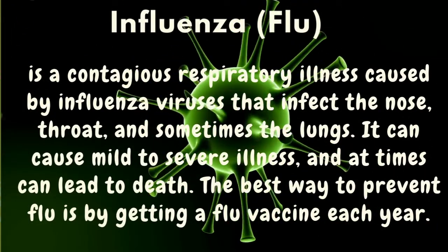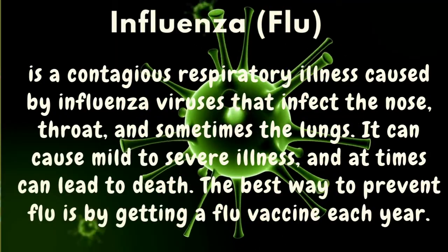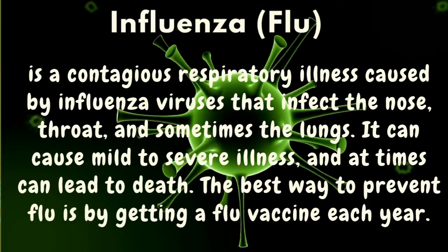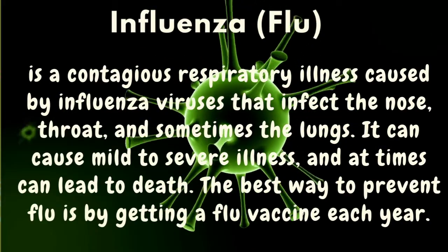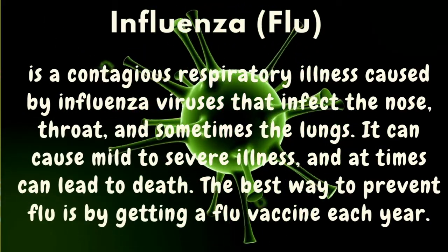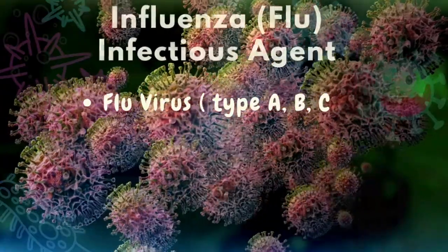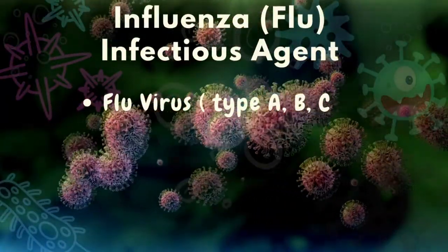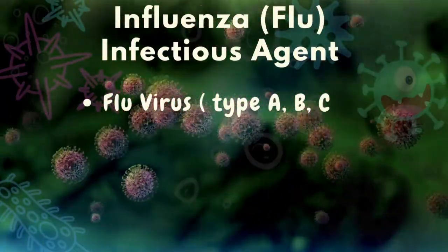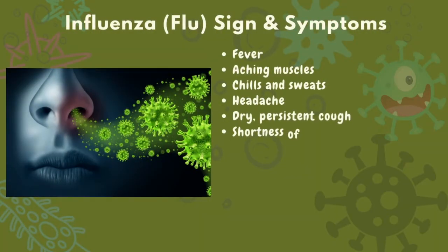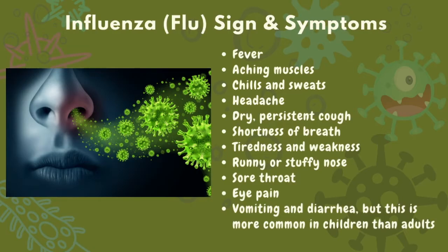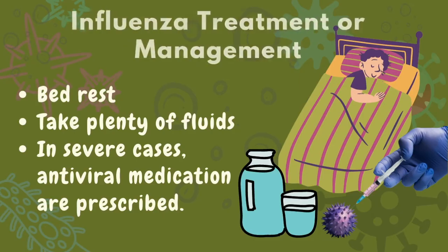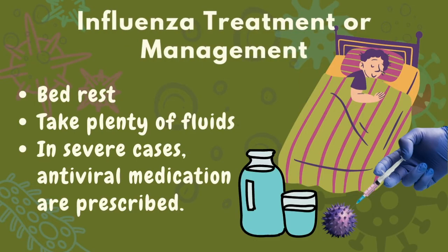Influenza or flu is a contagious respiratory illness caused by influenza viruses that infect the nose, throat, or sometimes the lungs. It can cause mild to severe illness and sometimes can lead to death. The best way to prevent this is to have a vaccine yearly. There are different types of flu virus — Type A, B, and C. These are the signs and symptoms of influenza or flu. In severe cases, antiviral medications are prescribed.